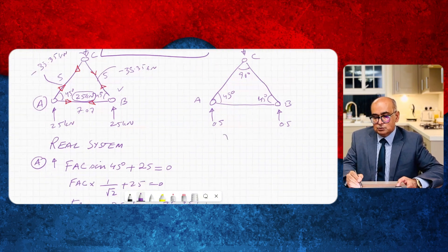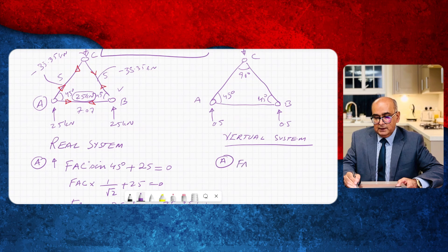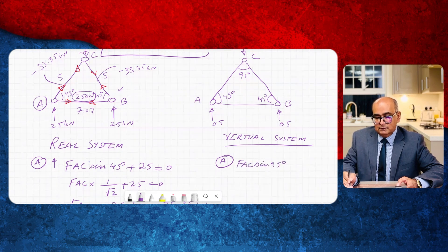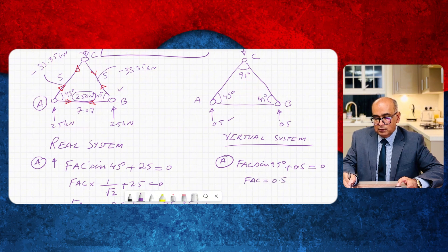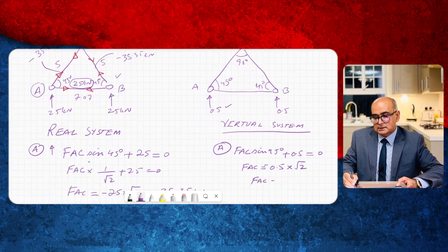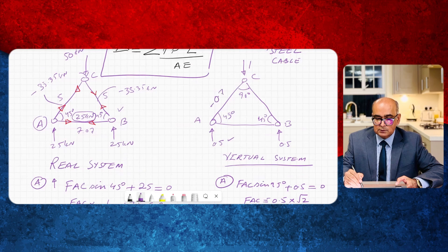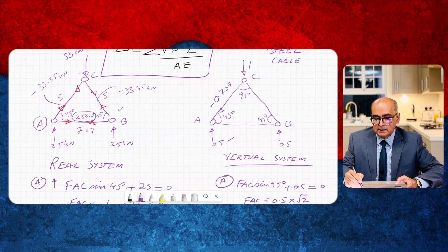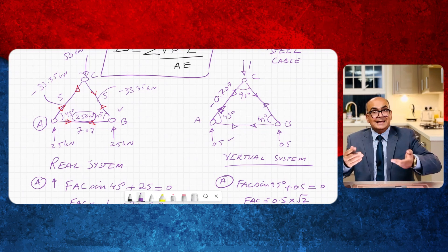Then I will apply the same logic to this virtual system as well. In the same way at joint A I will say FAC sin 45 plus the reaction which is 0.5 is equal to zero. So FAC will be equal to 0.5 minus 0.5 times under root 2. So if you multiply this you will get FAC as minus 0.707. Again my initial assumption is that arrows are pointing away from the joint means everything is in tension. So if something comes up as negative it means that it is compression.